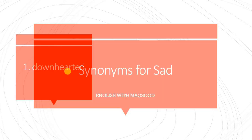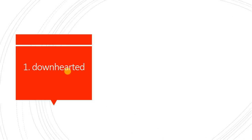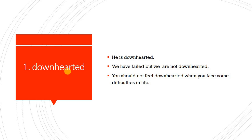So the first synonym of sad is 'downhearted.' Downhearted means udaas. Let's see how we use it in sentences. Number one: He is downhearted. Number two: We have failed but we are not downhearted. Hum naakam hue hain lekin udaas nahin hain — chahe hum naakam hogaye hain lekin hum udaas nahin hain. Hum dubara struggle karenge aur us mein kamyab hone ki koshish karenge. Aur insaan ko aisa hi karna chahiye.